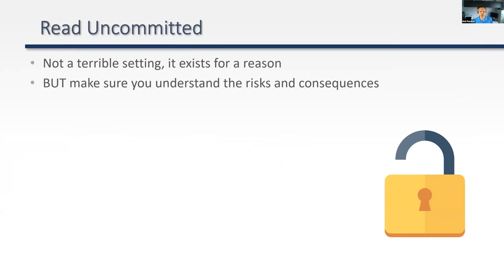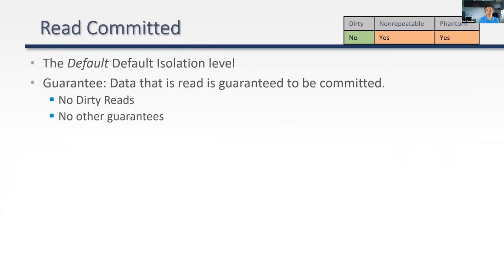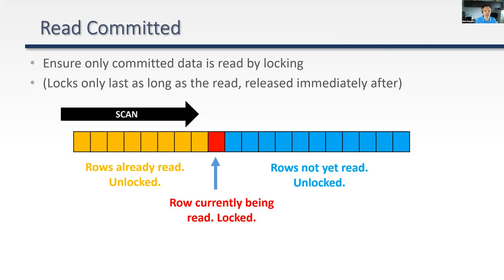Next is read committed — the default isolation level when you install SQL Server. This builds on read uncommitted by guaranteeing that any data you read has been committed — dirty reads are not allowed. No other guarantees are provided beyond that. The way read committed works is: as it reads a row, it acquires a shared lock on the row, reads it, then unlocks the row. The lock is only held for the duration of the read. So as we scan along, we're literally going to each row: lock it, read it, unlock it, next row.